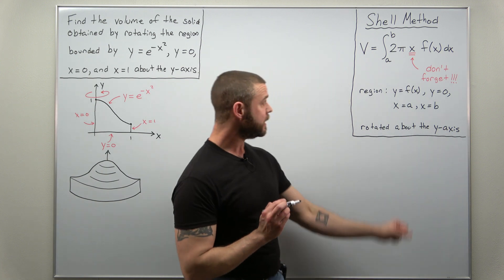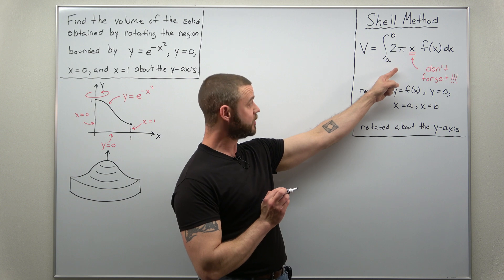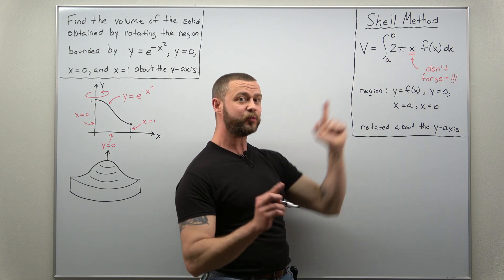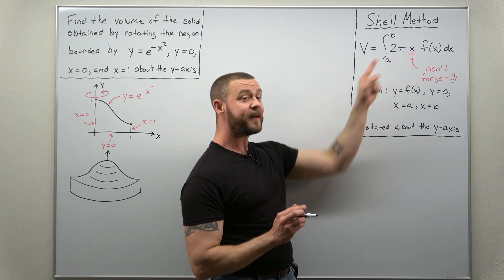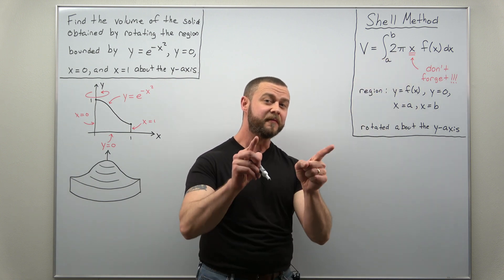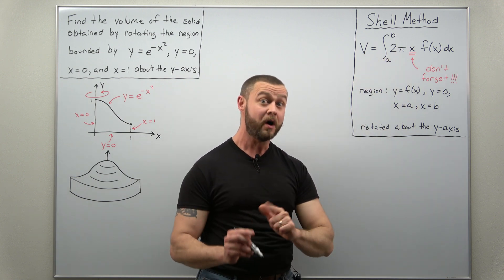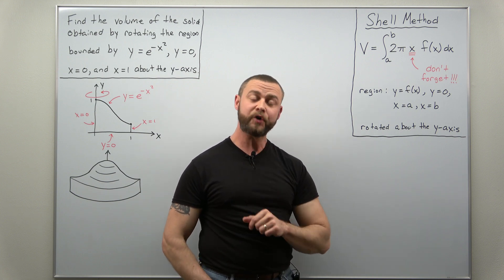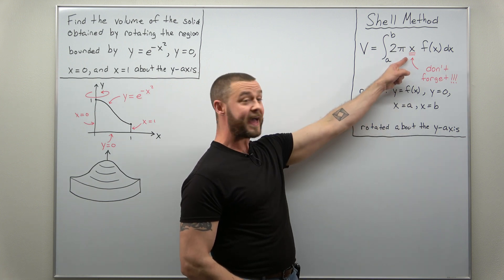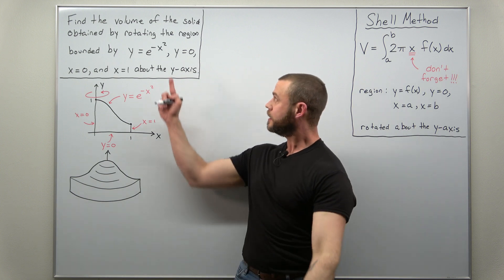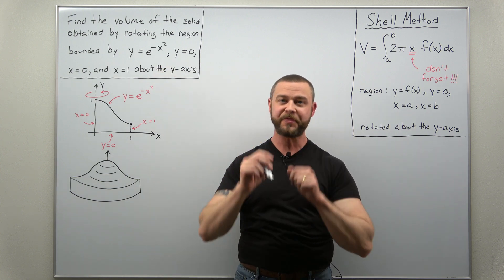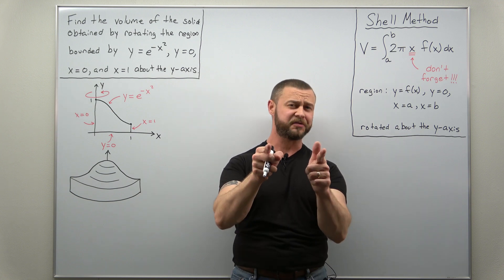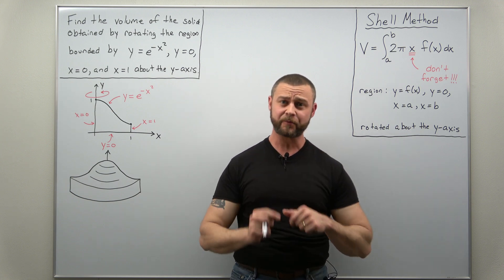Now it's worth pointing out in your volume formula here for the shell method that factor of x, while it's often forgotten, so don't forget it. That factor of x is often used in your differential du when you use a substitution and that makes all the difference here. Without that factor of x you'd be left with an impossible integral, but with the factor of x the integral is very straightforward. So let's get right to it.